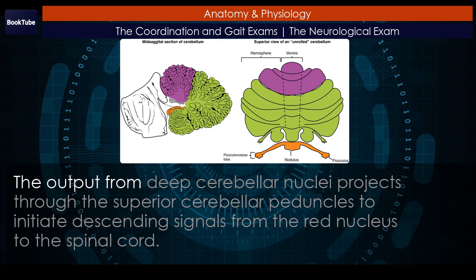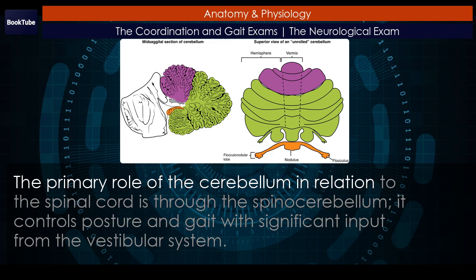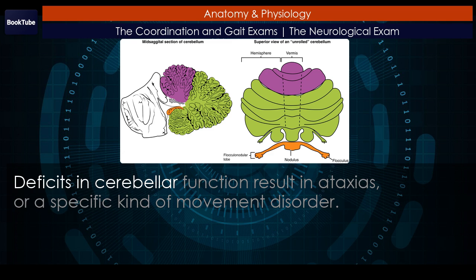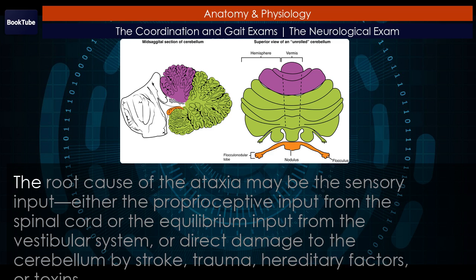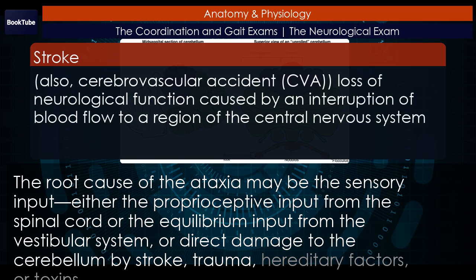The output from deep cerebellar nuclei projects through the superior cerebellar peduncles to initiate descending signals from the red nucleus to the spinal cord. The primary role of the cerebellum in relation to the spinal cord is through the spinocerebellum. It controls posture and gait with significant input from the vestibular system. Deficits in cerebellar function result in ataxias, or a specific kind of movement disorder. The root cause of the ataxia may be the sensory input, either the proprioceptive input from the spinal cord or the equilibrium input from the vestibular system, or direct damage to the cerebellum by stroke, trauma, hereditary factors, or toxins.